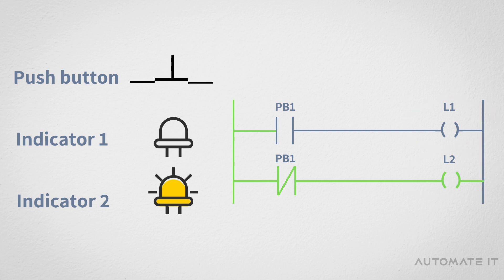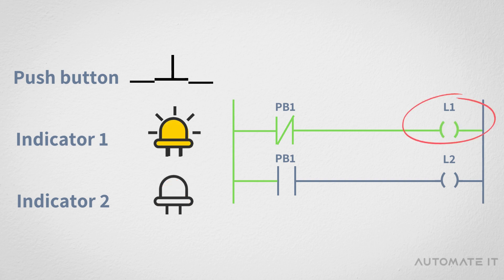When the push button is pressed, the normally open contact used in the first rung becomes normally closed, so it will turn on and power up the first output. At that time, the normally closed contact used in the second rung becomes normally open, so the second indicator will be off.